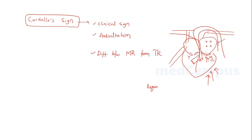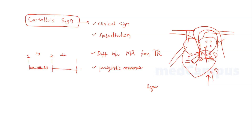During these regurgitant lesions — mitral regurgitation and tricuspid regurgitation — you will see a pan-systolic murmur, because during ventricular systole the valves are failing to close properly and blood is entering the atria from the ventricles. With the help of a phonocardiogram, we can depict this: you see a pan-systolic murmur in both TR and MR. However, based solely on the murmur you cannot differentiate whether it is tricuspid regurgitation or mitral regurgitation.